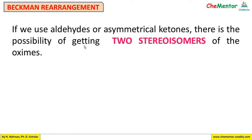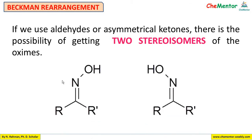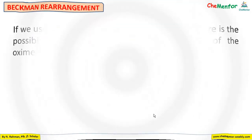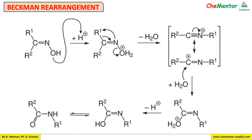If we use aldehydes or asymmetrical ketones, then there is a possibility of getting two stereoisomers of the oxime. These are the two stereoisomers formed because the starting carbonyl was an asymmetrical ketone. In one case we get OH cis to R prime, and in another case OH is cis to R.